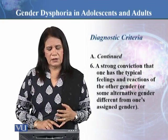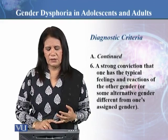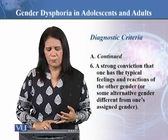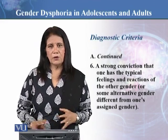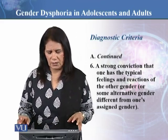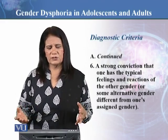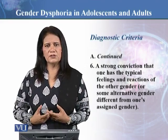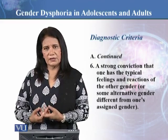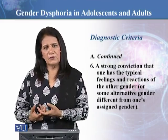Feature six is a strong conviction that one has the typical feelings and reactions of the other gender, or some alternative gender different from one's assigned gender — the gender one is born with. They strongly believe that their feelings and reactions belong to the other gender.